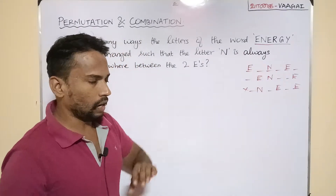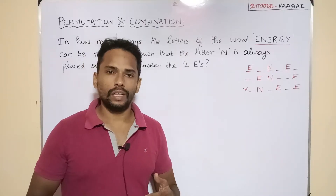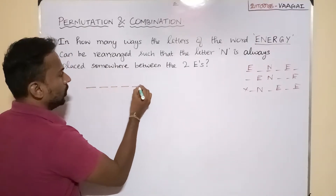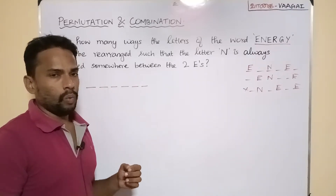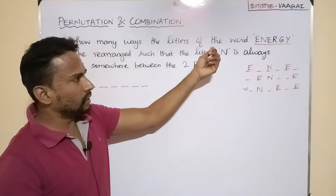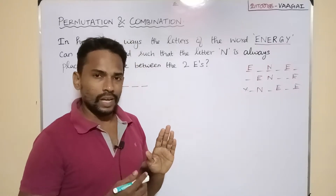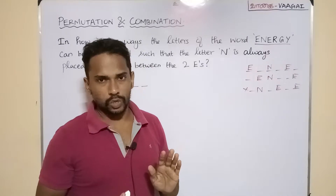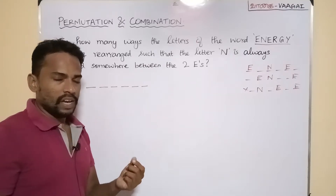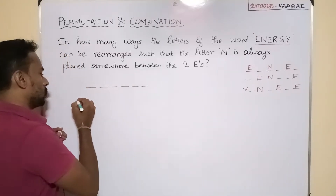Now I think you've got the clarity. There are two good approaches to solve this problem — let's see them one by one. Starting with the first approach: we have totally six letters, so let's make six slots. We need to arrange N between the two E's, which means we need to arrange the three letters E, N, and E in that fixed order. So it is enough for us to select any three slots out of the six slots.